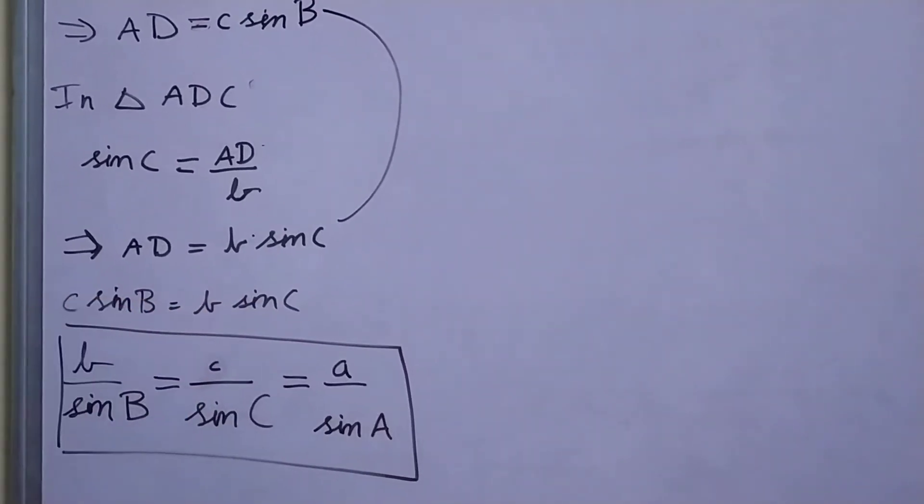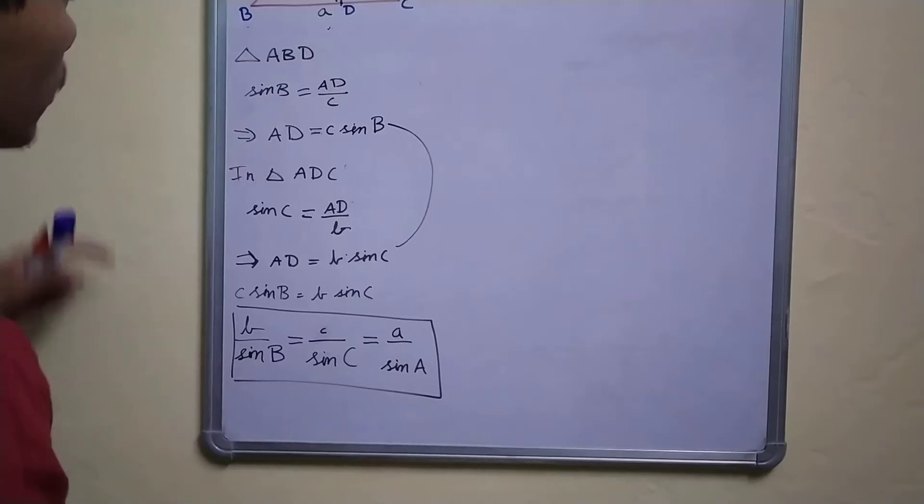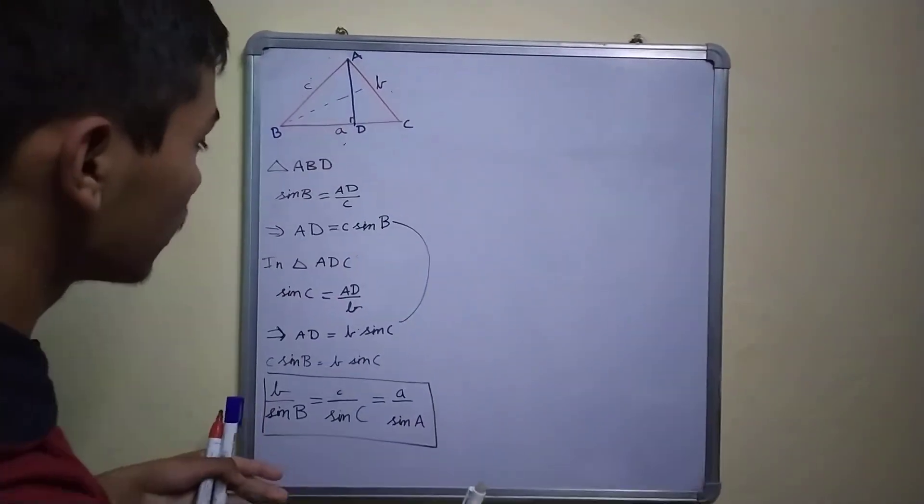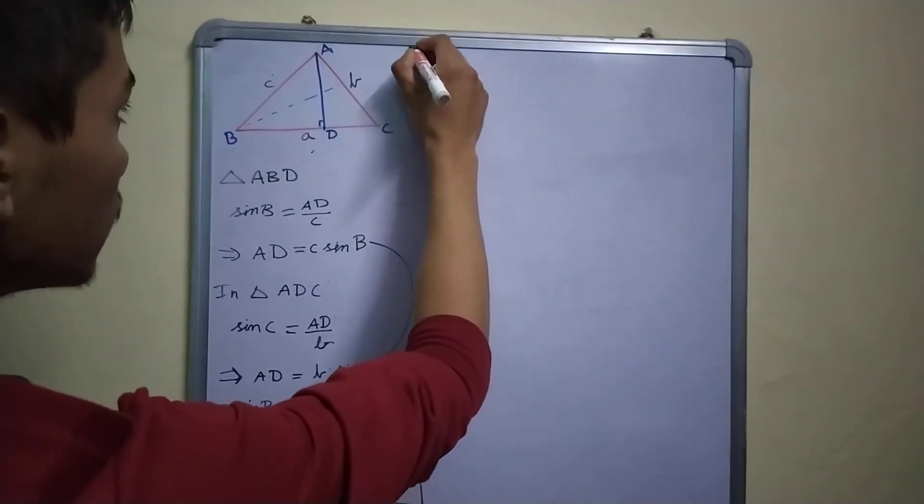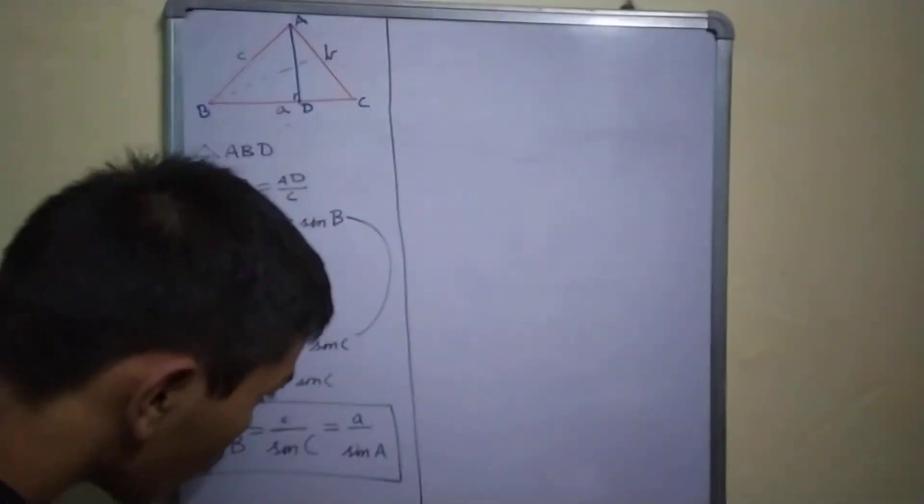This relation is called the sine rule. Now you may have noticed that in this triangle, I have taken an acute angle triangle. So does this work for obtuse angle triangles as well? Yes, it does.